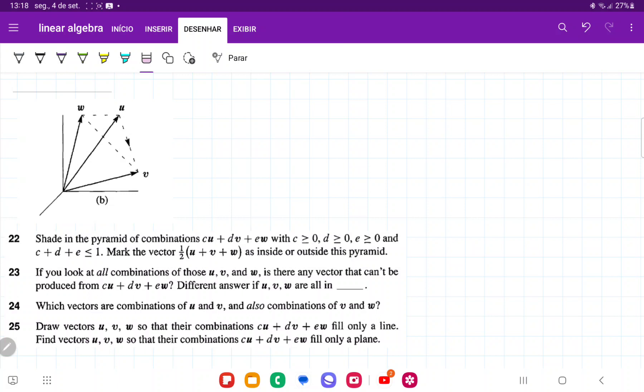So it is actually asking us, hey, does all combinations of cu, dv, and ew, do they fill all of three-dimensional space? And so, the other way to phrase this would be, are they linearly independent? Do the three vectors contribute different directionalities in 3D space?